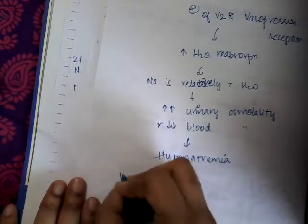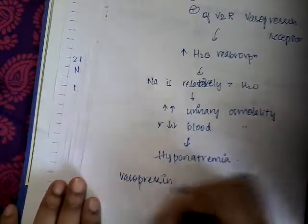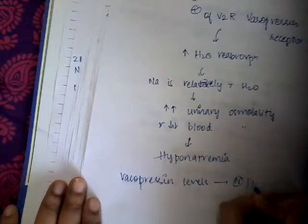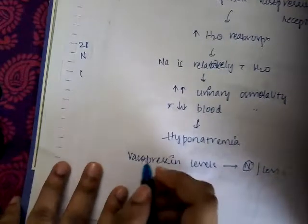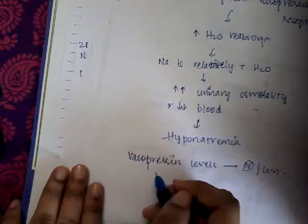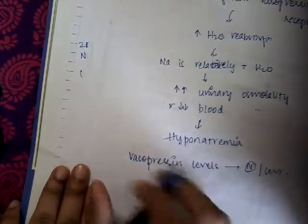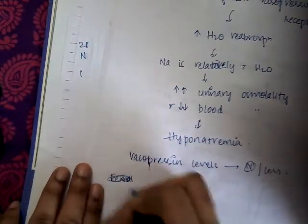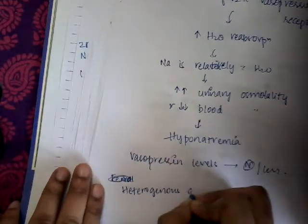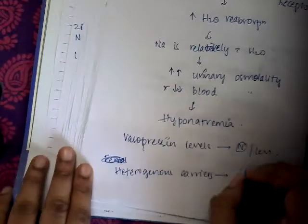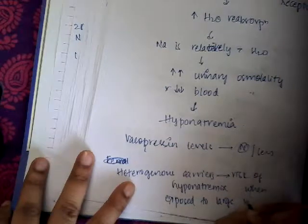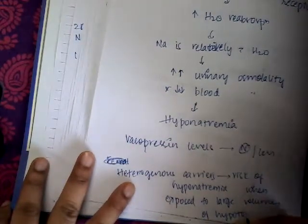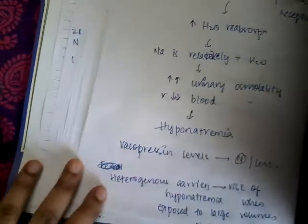Here vasopressin levels are normal or low. Though there is less vasopressin, because of the activation of the receptor there is increased water reabsorption. In females or heterozygous carriers, there is a risk of hyponatremia only when exposed to large volumes of hypotonic fluid. This is about nephrogenic syndrome of inappropriate antidiuresis.